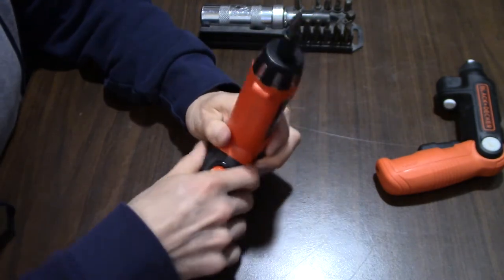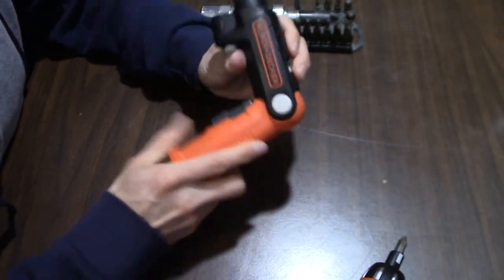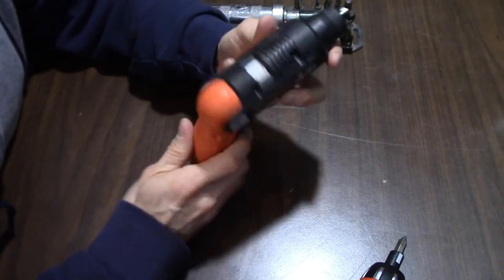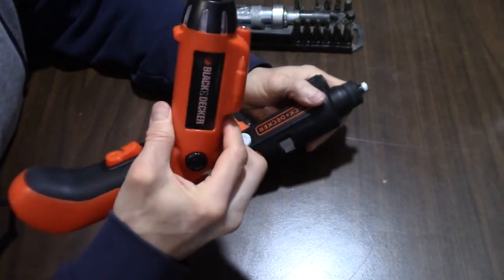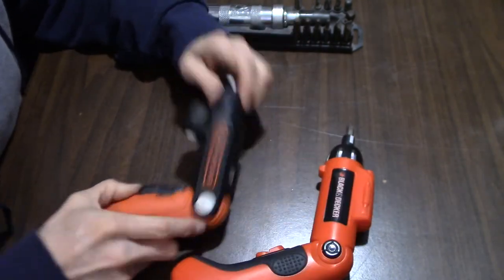Nice rubber grip here on this one. This one has a plastic grip. This one does not have a bit holder anywhere. This one, well, if it wasn't fake, it would have a bit holder and a clutch, which this one does not have.